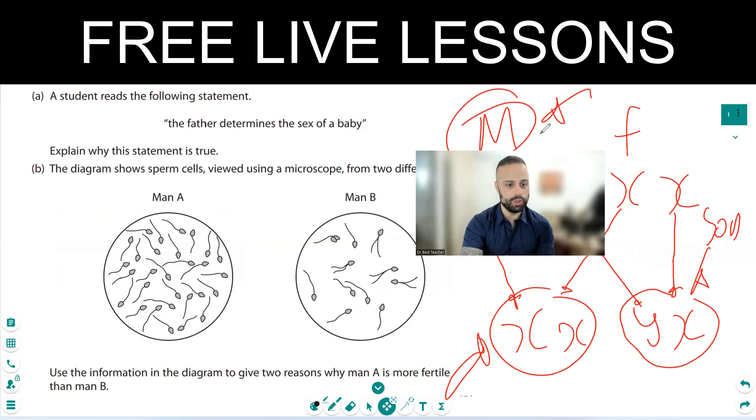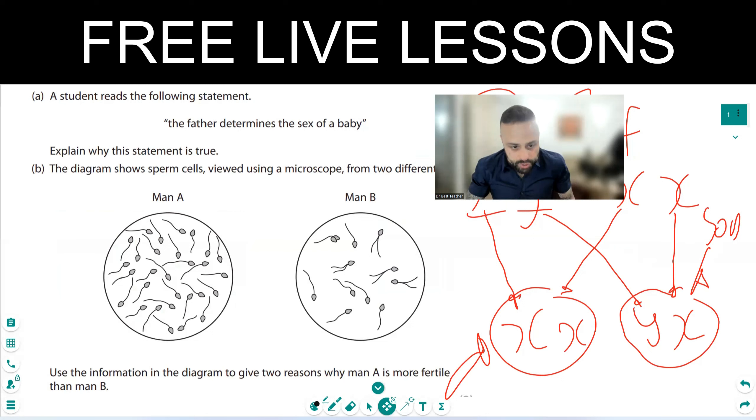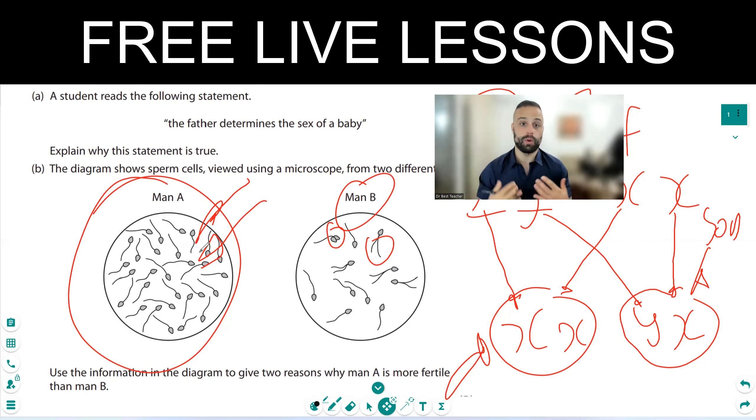Now I'm going to talk about this question. Use the information to give two reasons why A is more fertile. Well, we have more sperm cells in there, and also B have two tails. Some of them have two heads, so they're not going to be functioning properly. The sperm cells in A look much more healthier.